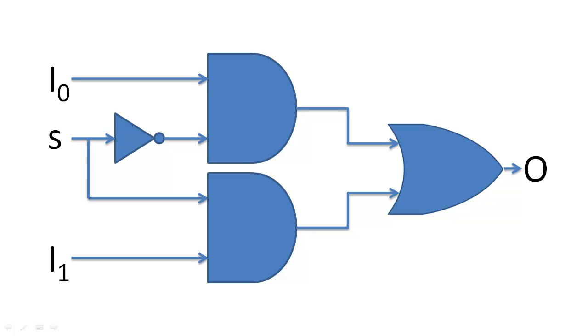We can use tri-state buffers much like how we use multiplexers. In a multiplexer, we use a select bit to choose which data input's value is sent to the output.